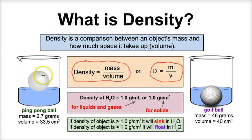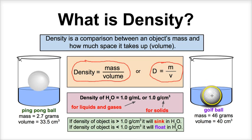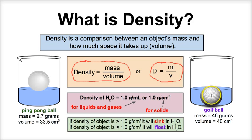If we take a look, the ping pong ball is floating in this water here, and the golf ball sinks in this water here. Well why? Why does that happen? In order to figure this question out we have to take a look at each substance's density.